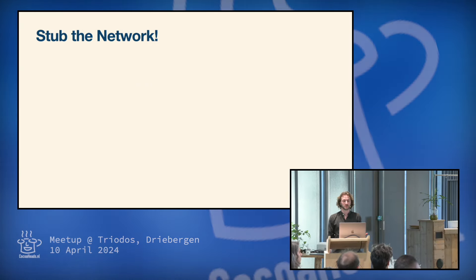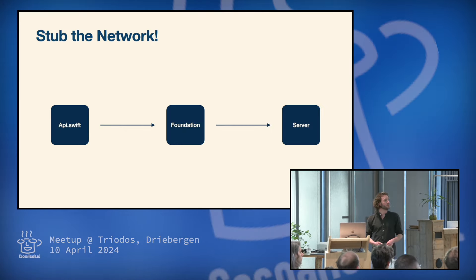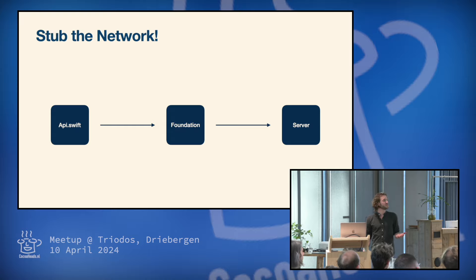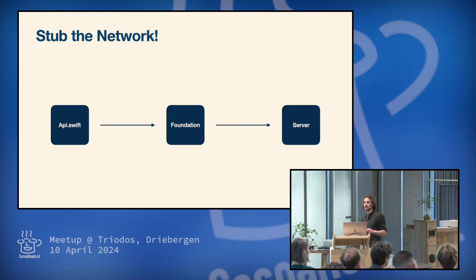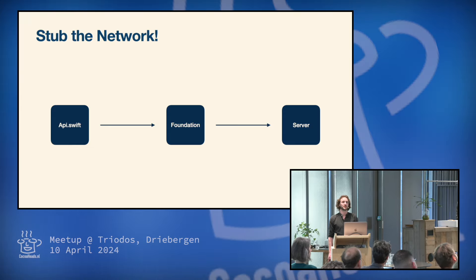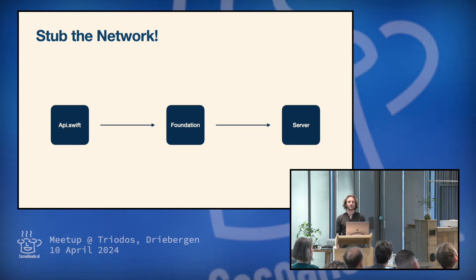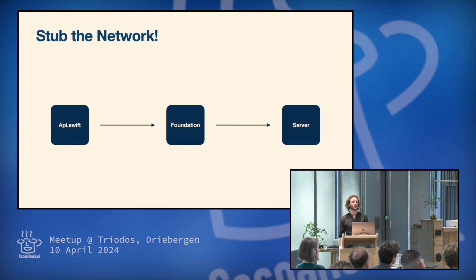So how can we solve this? We could stop the network. But how? So in most of the apps, you write some code — that's basically your network layer. And that layer uses Foundation, the NSURLSession APIs, to connect to a server. So I think there are mainly three options where we could take a look at how we could do this stubbing.